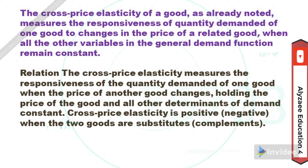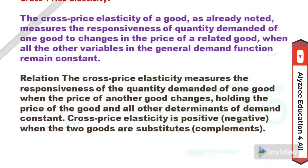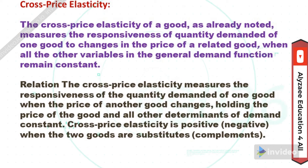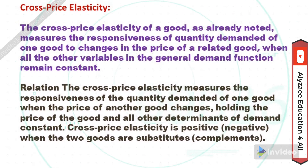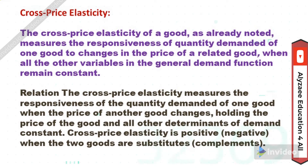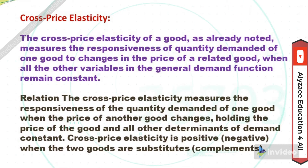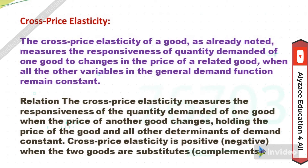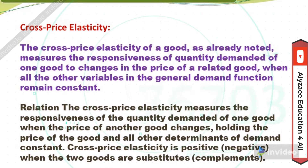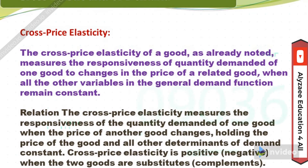By definition, the cross price elasticity of a good measures the responsiveness of quantity demanded of one good with the change in the price of a related good, when all other variables in the general demand function remain constant. In relation, the cross price elasticity measures the responsiveness of quantity demanded of one good that occurs with the price change of another good, holding the price of the good and all other determinants constant.